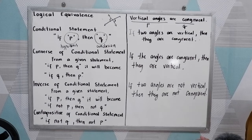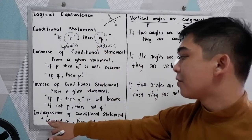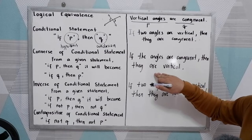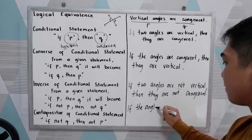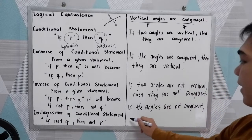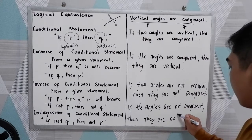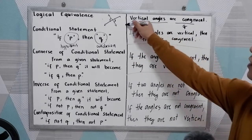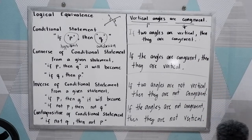And last, we have the contrapositive of the conditional statement. From 'if p then q,' the contrapositive becomes 'if not q then not p.' So the contrapositive is: 'If the angles are not congruent, then they are not vertical.' So we have the conditional statement, the converse, the inverse, and the contrapositive.